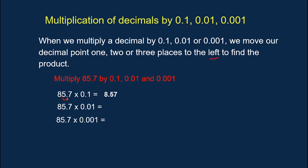Move one place to the left. For the next one: 85.7 times one-hundredth. In one-hundredth we have two places, so we move this two places to the left: one, and two. The position of our decimal point is here — just affix a zero. Our final answer is 0.857.